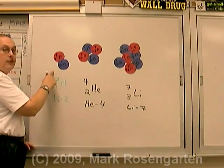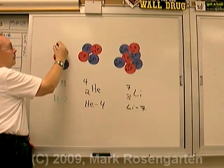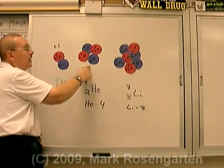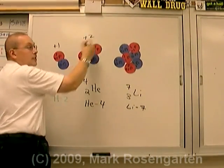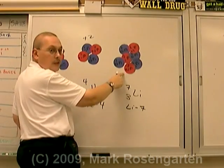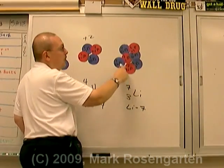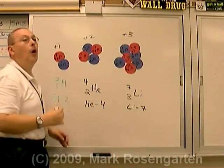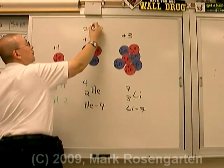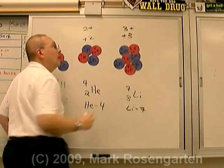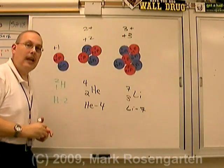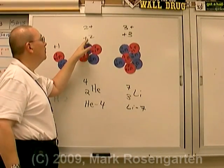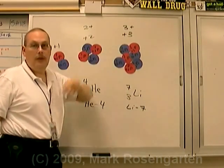The nuclear charge of the hydrogen nucleus is plus one. The nuclear charge of the helium nucleus with two protons is plus two. The nuclear charge of the lithium nucleus with three protons is plus three — or if you prefer, two-plus and three-plus. The convention I will be using in these videos puts the plus or minus sign before the number.